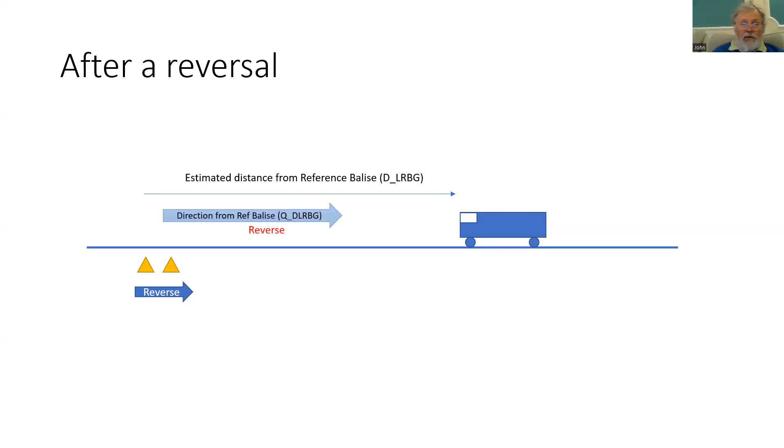It will also report which direction relative to the balise group that distance has been measured. In this case, the reverse direction. It will report the orientation of the train relative to the balise group. Since it is going in the same direction as the nominal direction of balise group, that would be nominal. And the direction of the movement relative to the balise group, assuming the train is going forward, will also be nominal.